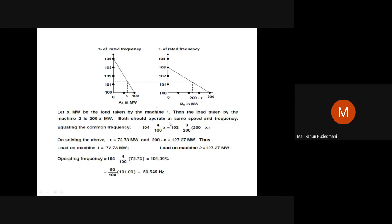Let X megawatt be the load taken by machine 1; then the load taken by machine 2 is 200 minus X. This is the conventional approach. Both must operate at the same speed and frequency when delivering 200 MW — their frequency and RPM must match. Therefore, equate the common frequency. This is Dr. Jagadishan's presentation style from his power system operation and control textbook.